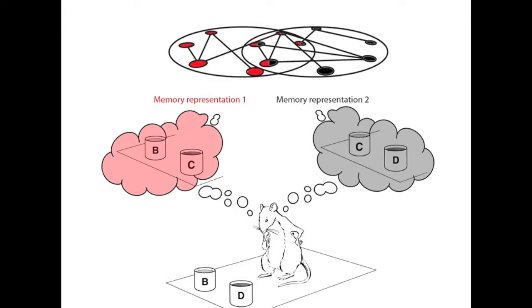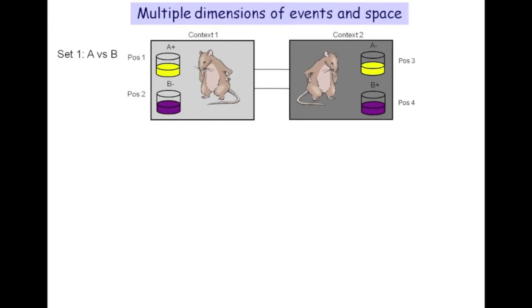It is unknown which coding scheme the hippocampus uses to store and associate sets of related experiences. It is also unknown which dimensions of an experience define the structure of the representational space. To address these questions, we taught rats a set of related associations.